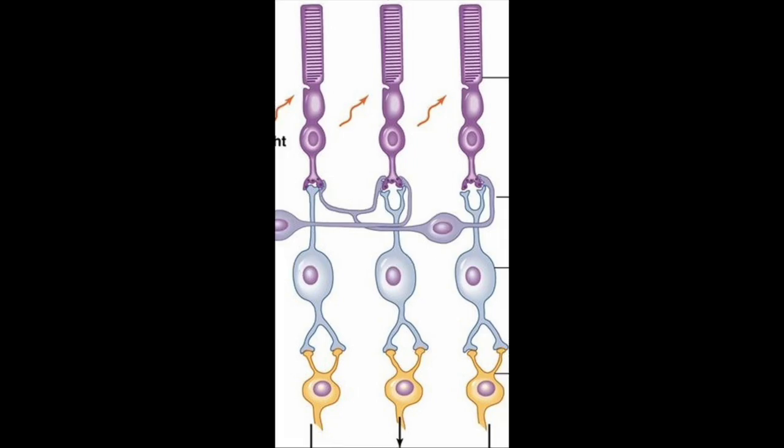Lateral inhibition occurs between outer photoreceptor cells towards the central photoreceptor cell, causing the central photoreceptor cell to stop firing.